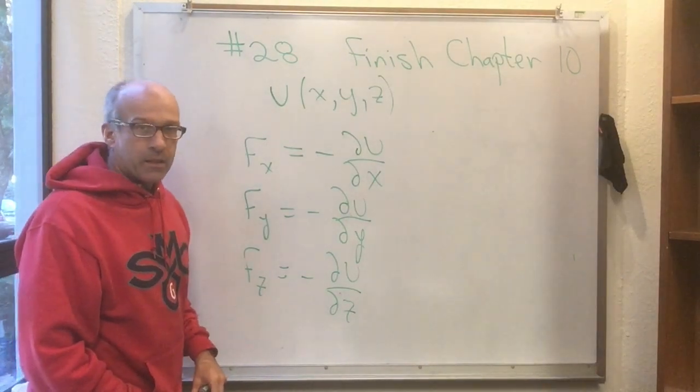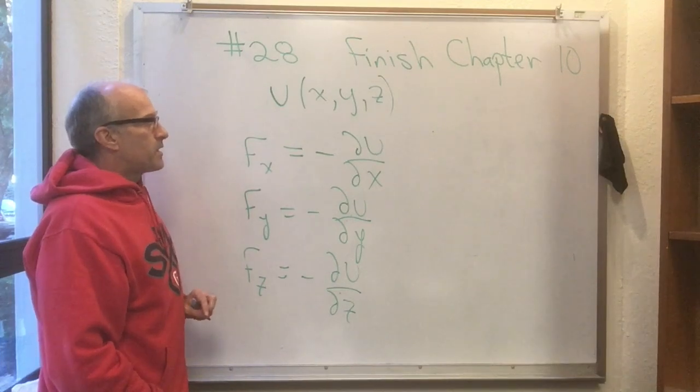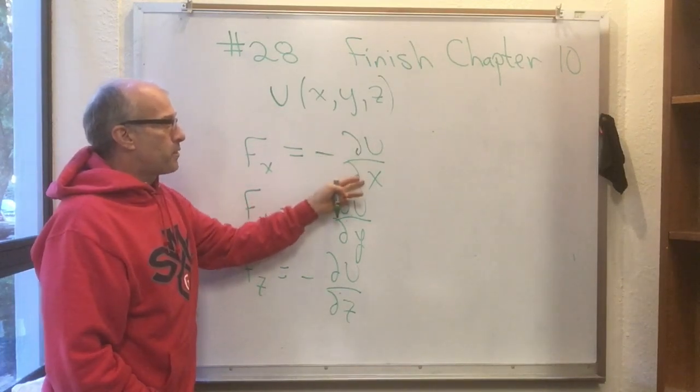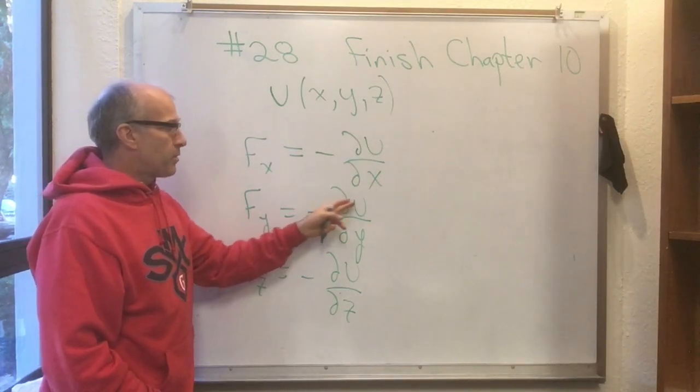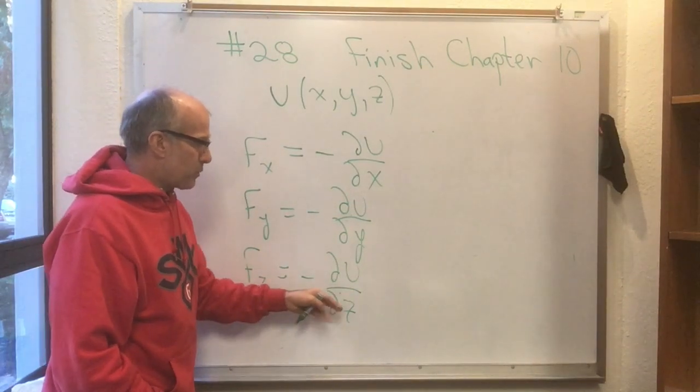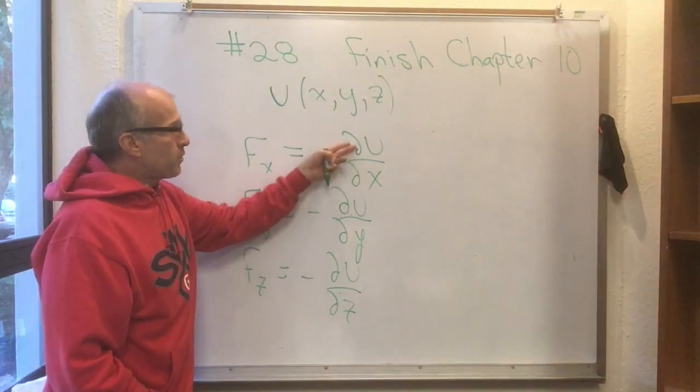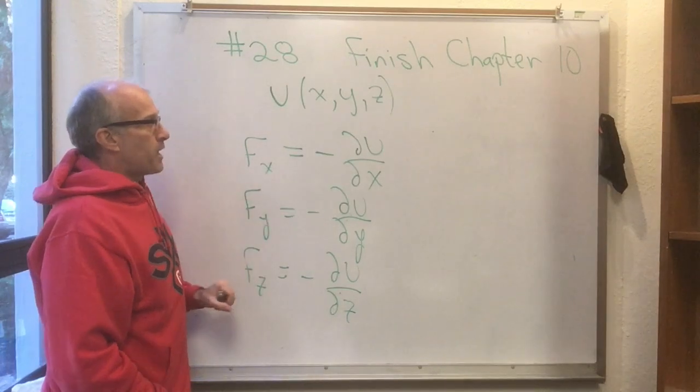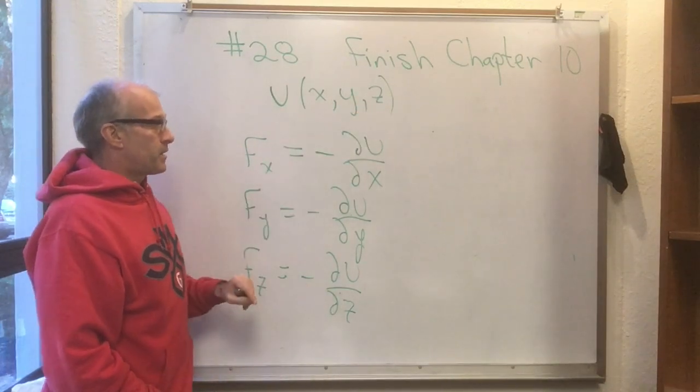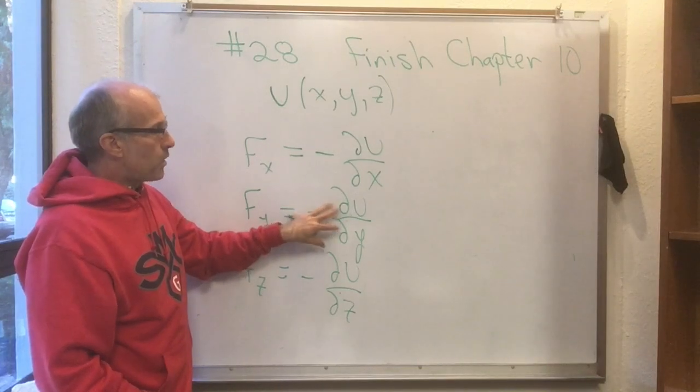And then instead of saying dU/dx they say the partial derivative of U with respect to x, or the partial derivative of U with respect to y, or the partial derivative of U with respect to z. And what they mean by that is that you're taking a derivative with respect to x here while pretending that y and z are constants.